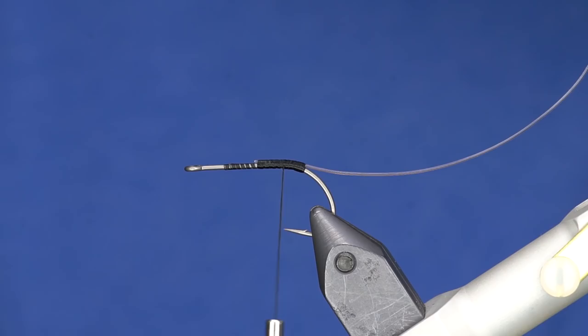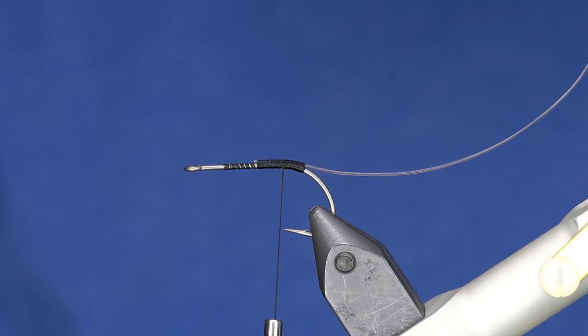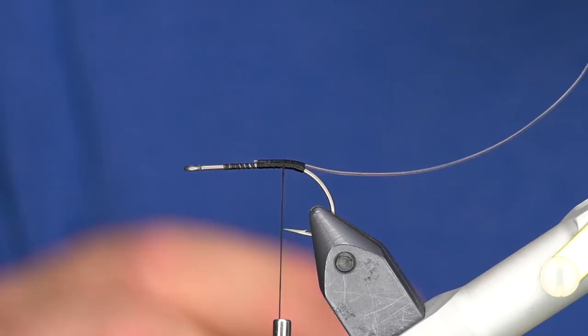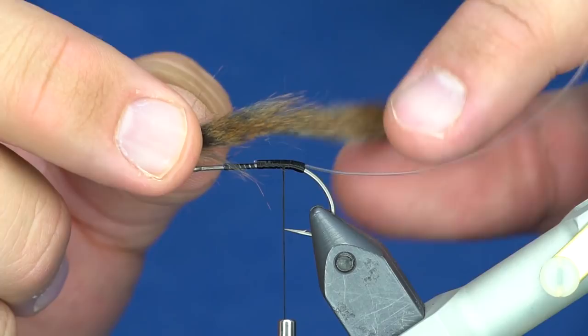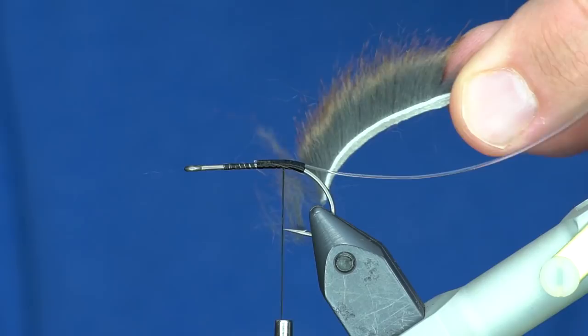The tail is going to be tied out of squirrel. If you're going to tie these mouse patterns, I would suggest buying a whole squirrel pelt. I've gone through a whole bunch because you use almost a full squirrel strip per fly, even for the mini ones. I've trimmed off a piece of squirrel hide and I want this tail to be about one and a half times the length of the shank of the hook.